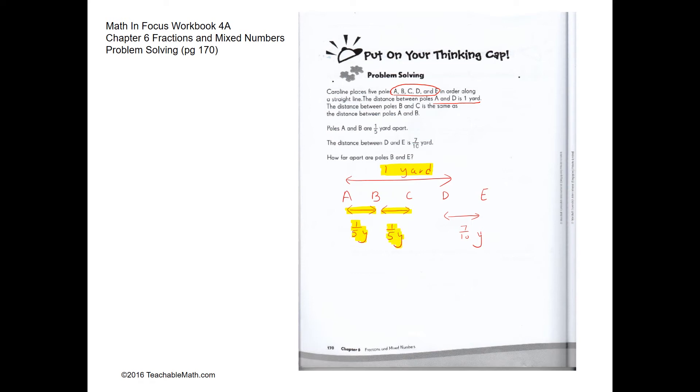The distance between D and E is 7 tenths. So it is 7 tenths. So the question is how far apart are poles B and E? So to do that, first we have to figure out what is the distance between C and D.